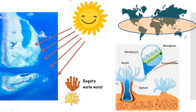Since the algae perform photosynthesis, it is only natural that coral reefs are mostly found in regions where sunlight can penetrate through the waters. Corals also require warm water and cannot tolerate long periods of sun exposure, so they are found in the shallow coastal zones of tropical and subtropical oceans.